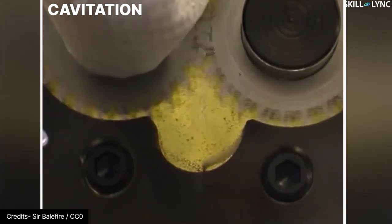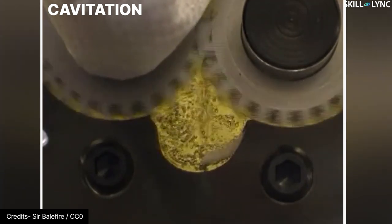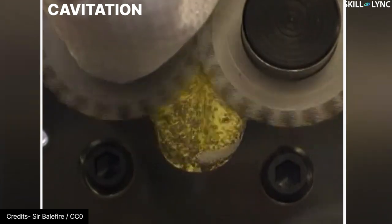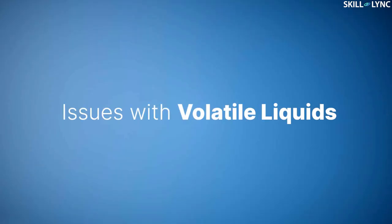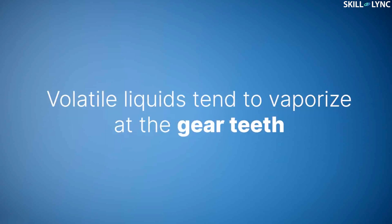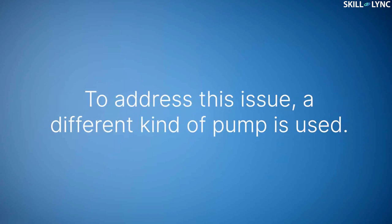Gear pumps are not without disadvantages. Increasing the RPM of the pumps higher than the prescribed value for a fluid can lead to cavitation. The pumps also have issues when pumping volatile liquids. This is because volatile liquids tend to vaporize locally as gear teeth spaces expand. To address this issue, a different kind of pump is used.